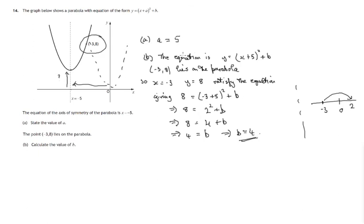So we now know, this is not required, we've actually finished the question, but we now know the equation is y equals x plus 5 squared plus 4. In other words, the graph y equals x-squared has been shifted 5 units to the left and 4 units up. So this point here, which we're not asked for, would be negative 5, 4. Some questions you are asked for that. But anyway, a is 5, b is 4.